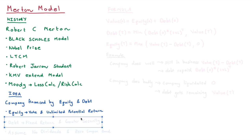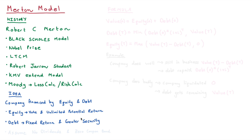Debt, on the other hand, gets a fixed return — for example, lending money at a rate of 10%. This lower potential return comes with greater security. If a company has to fall apart, debt gets repaid first because debt holders have higher security and lower risk, while equity gets paid out last because equity holders take on higher risk and therefore get higher return.